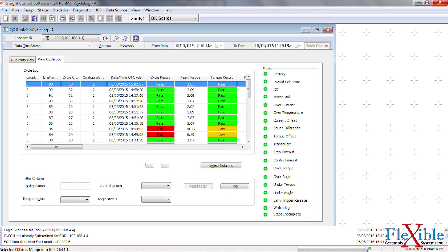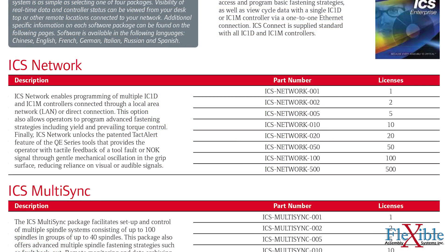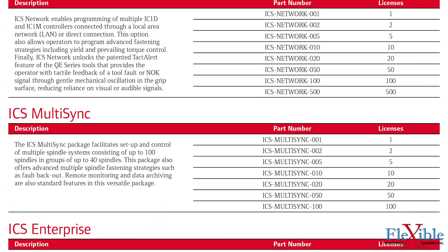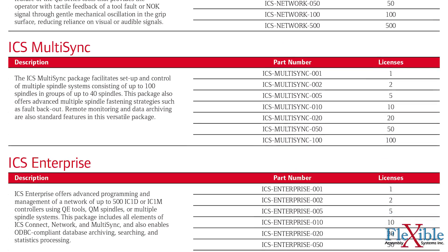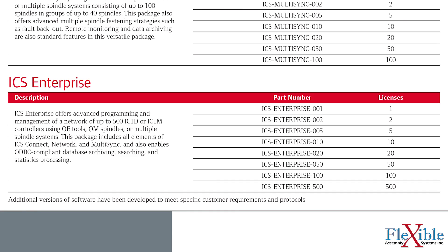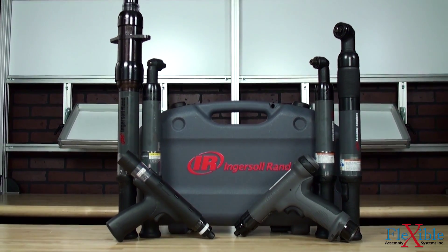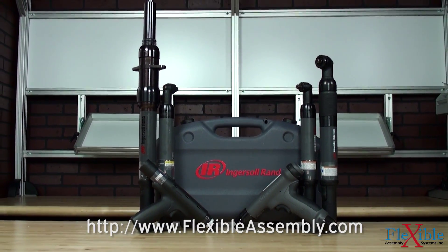The ICS Network package allows users to program multiple controllers through a LAN network and access advanced strategies such as yield and prevailing torque control. ICS MultiSync facilitates setup and control for multiple spindle systems, and the ICS Enterprise package can network up to 500 IC controllers at once. Find your complete controller and tool solution today at FlexibleAssembly.com.